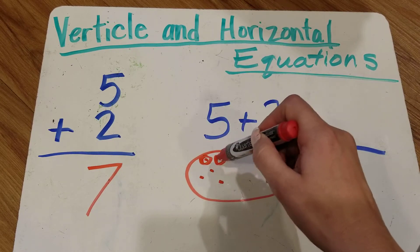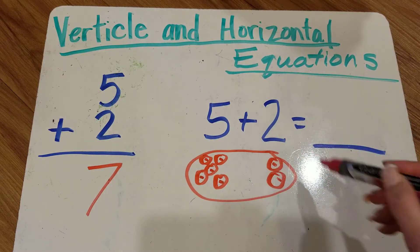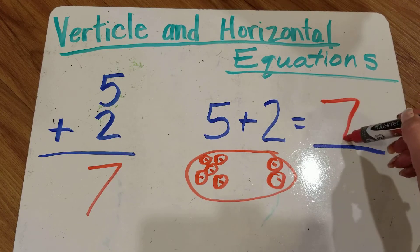1, 2, 3, 4, 5, 6, 7. 5 plus 2 equals and we put the answer on the line. 7.